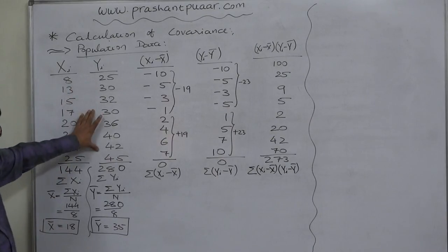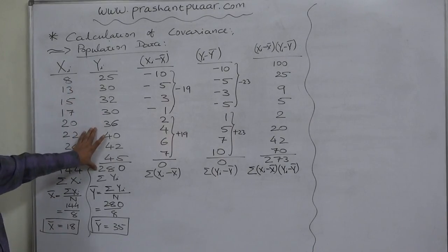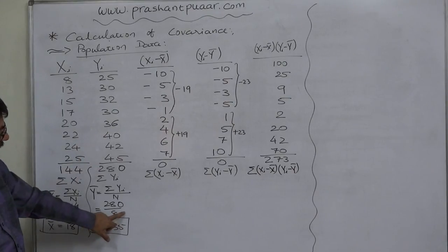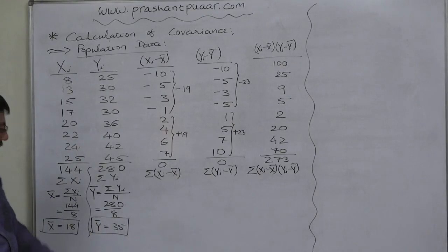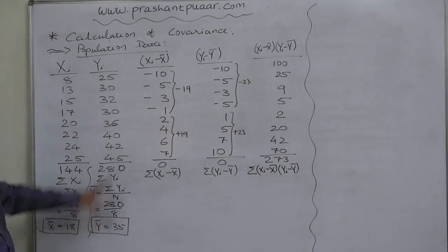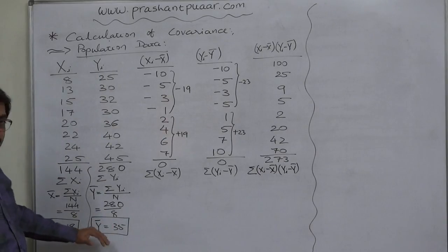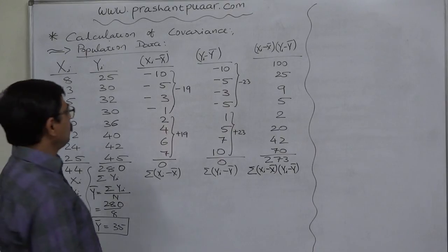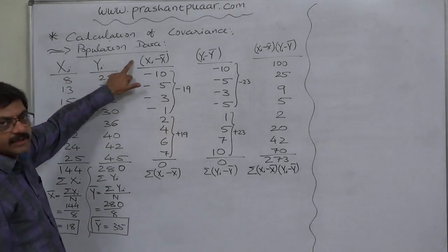Similarly, we get summation of population y as 280, again divide it by the population size 8 and ultimately we get the value of population mean of y, that is y bar 35. Now, the next step is to obtain the deviations from arithmetic mean.